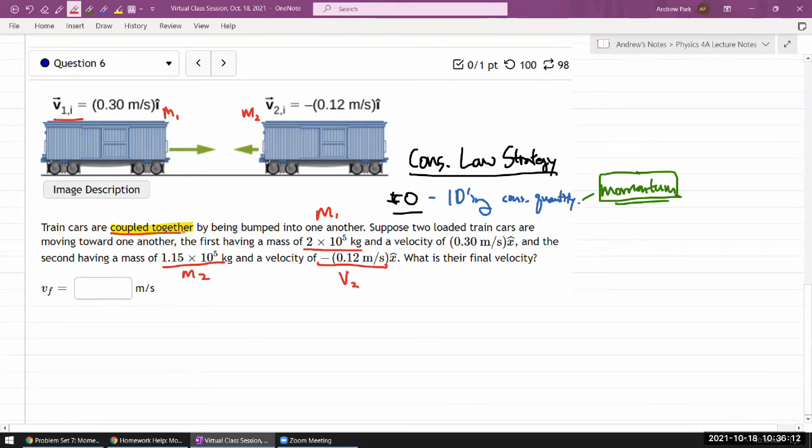And this is where this statement coupled together is important. That's actually giving you a really important piece of information that allows you to answer this question using conservation of momentum and this kinematical fact that after these two trains collide, they are stuck together. So they'll be moving as one body. And let me keep the convention that I picked for this V2. Let's say they will be moving with some final velocity that will be common to both of them.